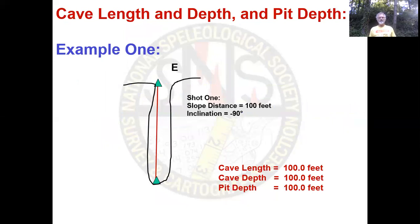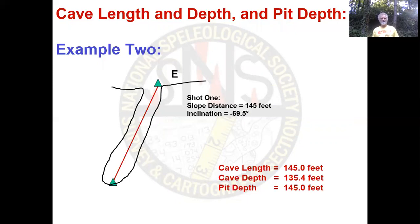Example one: a purely vertical 100-foot deep pit. In this case, cave length is 100 feet, cave depth is 100 feet, and pit depth is 100 feet. Example two is a sloping pit at about negative 70 degrees inclination, with a 145-foot shot. The cave length is 145 feet and the pit depth is 145 feet. But the cave depth — because it's the vertical distance between the first and second stations — is only 135 feet. This may seem a little strange: the cave depth is less than the pit depth. But it's legitimate — it works.